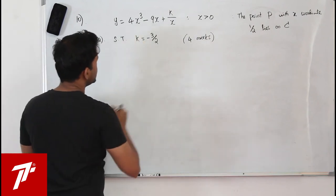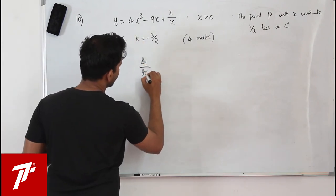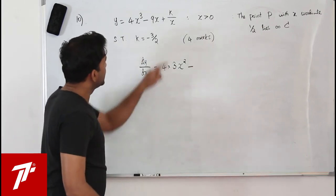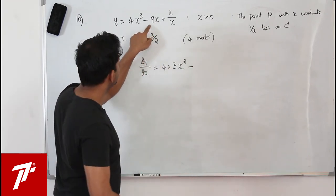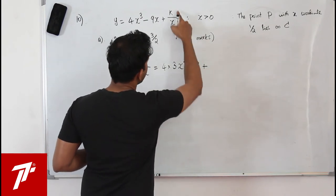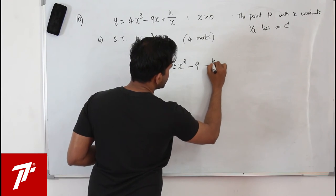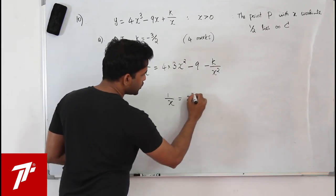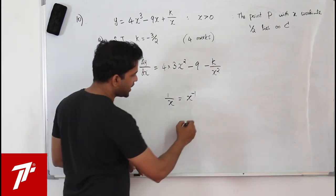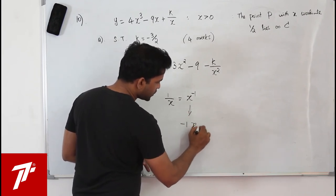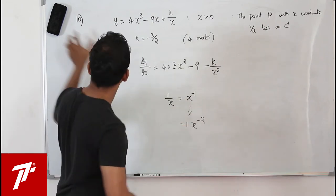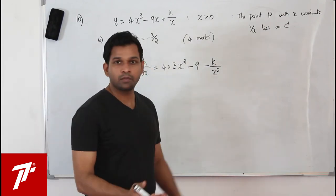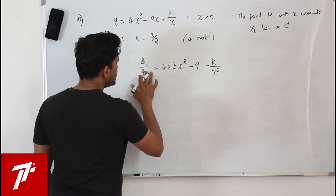To find the stationary point, differentiate and equate to zero. Differentiating y = 4x³ minus 9x + k/x: dy/dx = 12x² minus 9 minus k/x². Note that k/x = k·x^(minus1) differentiates to minus k·x^(minus2) = minus k/x².